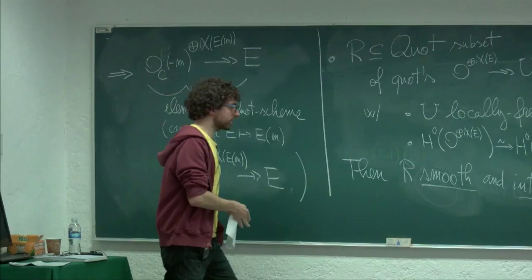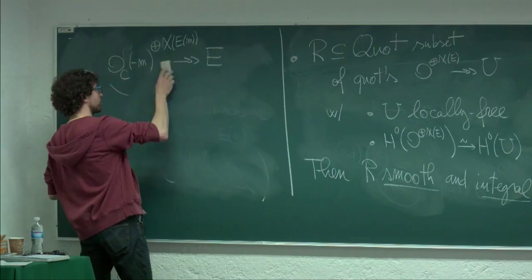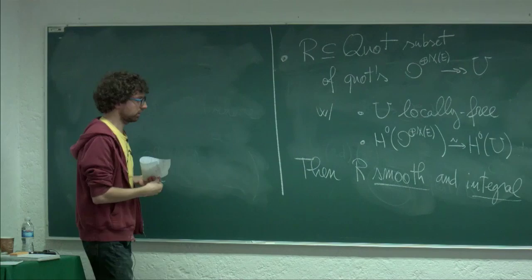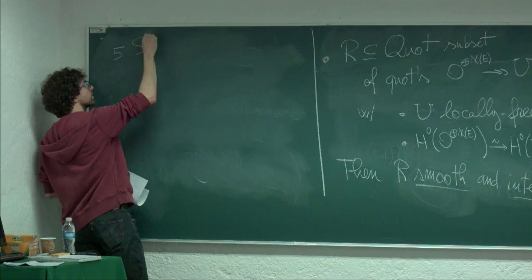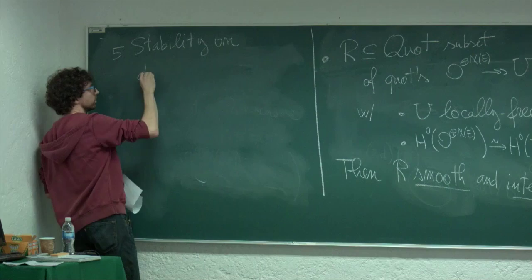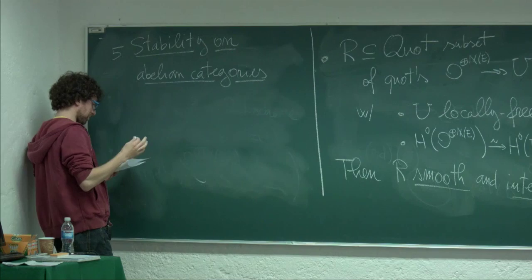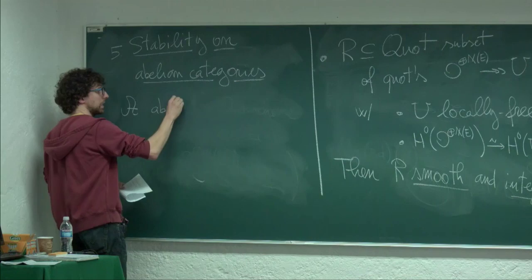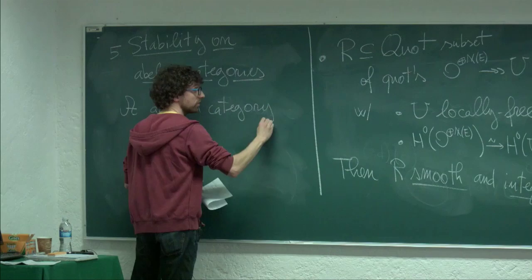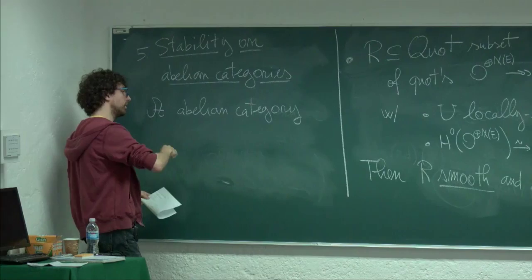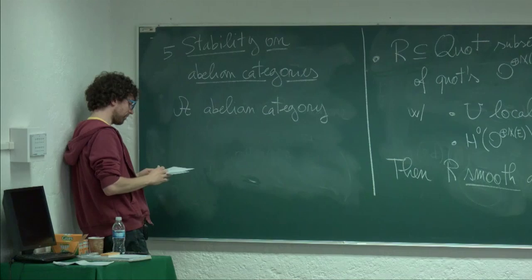Now we have to abstract a bit. The category we're working with is an example of a BN category in the full sense, so I have to give the definition in generality. This is section 5: stability on BN categories. In general, to prove existence of stability is messy, and in other dimensions it's still unknown. So let A be an abelian category. A stability condition consists of two functions: rank (taking values in the positive reals) and degree (also into R), defined on A.